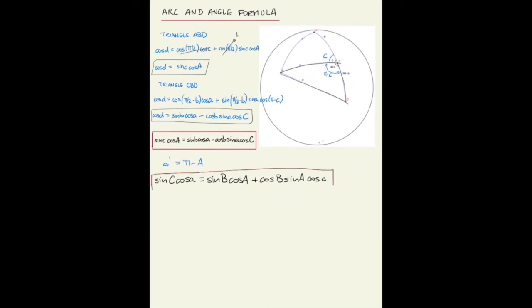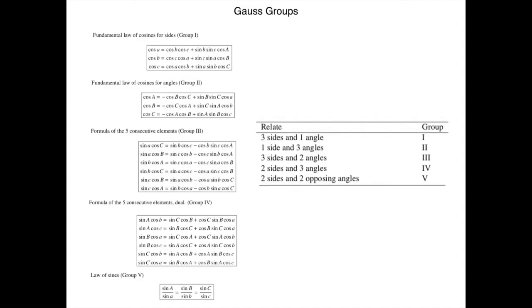Now we have these fundamental relations called Gauss groups. We have from group one the fundamental law of cosines for the sides. Group two is the same, the fundamental law of cosines for angles. You get group two from group one by applying the law of the dual triangle. Group three is the arc and angle formula, also called the five consecutive elements. Group four is the same but with the dual.